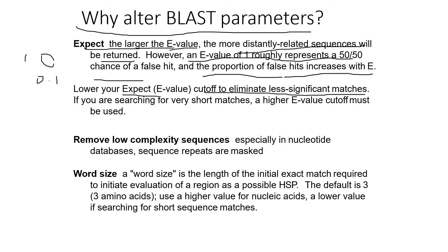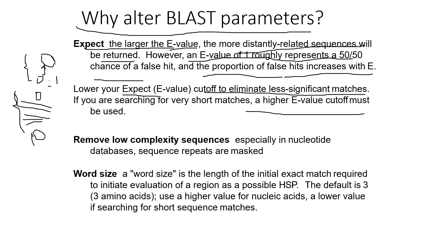To get from an E-value of 0.1 down to 0, there are very limited significant matches. If my E-value is 10, there are a higher number of matches to reach zero — higher probability of getting from 10 to 0 versus from 0.1 to 0. If you are searching for very short matches, a higher E-value cutoff must be used. Also, remove low complexity sequences — especially in nucleotide databases where sequence repeats are masked.